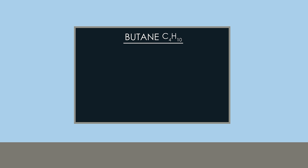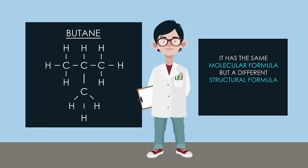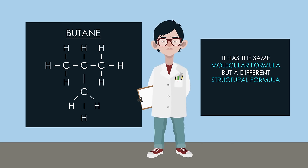I expect most of you have drawn a straight chain molecule like this. However, there is another way of arranging the atoms — it has the same molecular formula but a different structural formula. These two forms of the molecule C4H10 are called structural isomers.